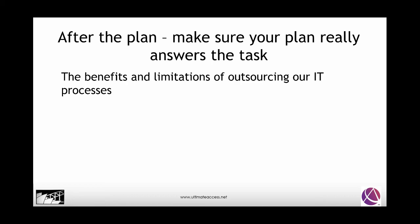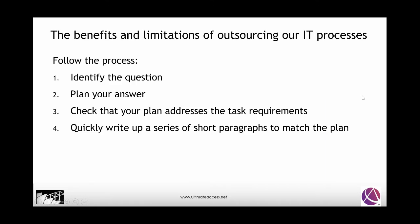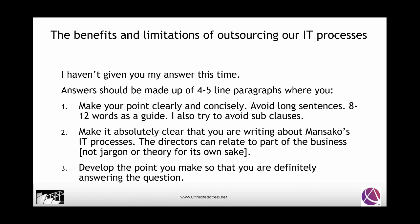So that's 13 headings covering benefits and limitations — we've pretty much hit the nail on the head. We answered the same question asked in the exam. We identified the question, planned the answer, and checked our plan is dealing with the benefits and limitations of outsourcing the Manseco IT processes. Aim for four to five line paragraphs. Try to avoid complex sentences with sub-clauses — your examiner will be reading fast, so keep sentences short and clear.